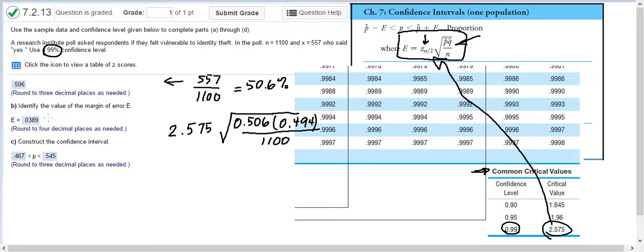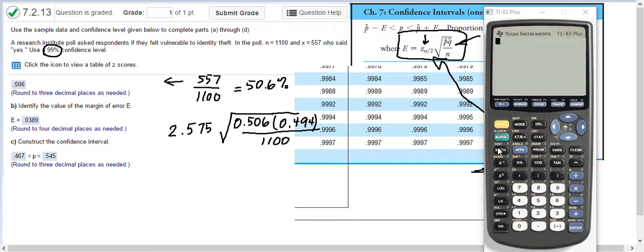Alright, now I'm going to show you also, here's how you might do this on the graphing calculator. And so first off, let's just calculate this manually to prove that we get the right answer. 2.575 and we're going to do square root. We're going to be careful here with our parentheses. 0.506 times 0.494, close up parentheses, divided by 1,100. And we get 0.0388.